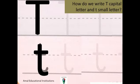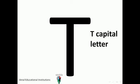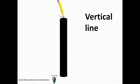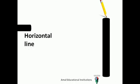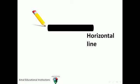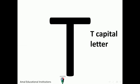Now how do we write T capital letter and T small letter? Let's see. T capital letter — how do we write T capital letter? First, we write a vertical line from up to down. Then we write a horizontal straight line from left to right. And now we have T capital letter — T!